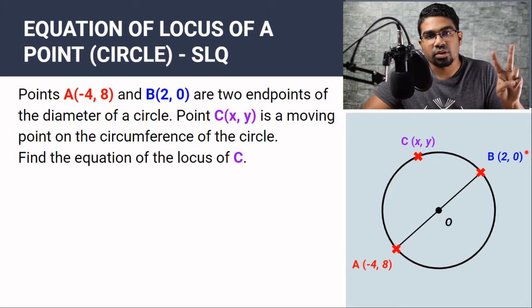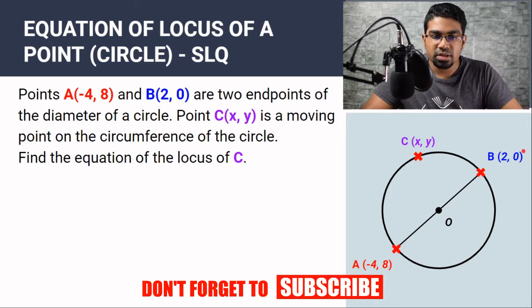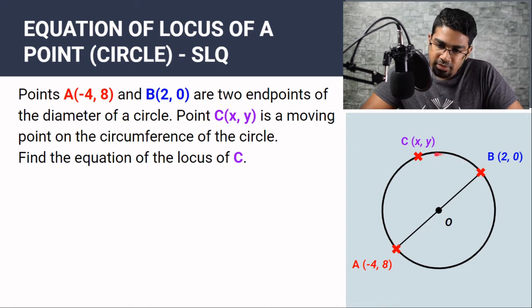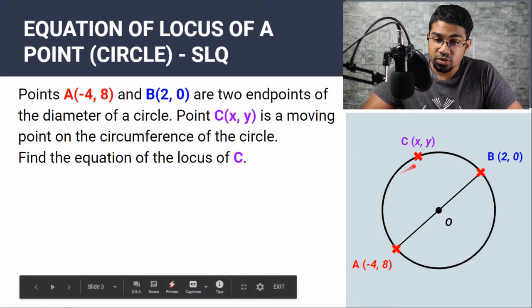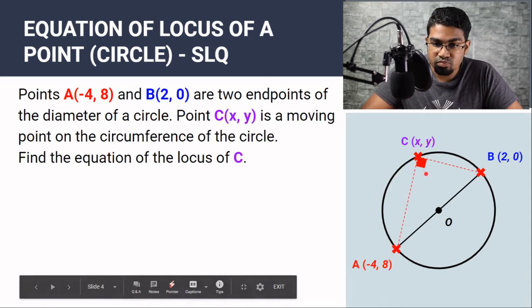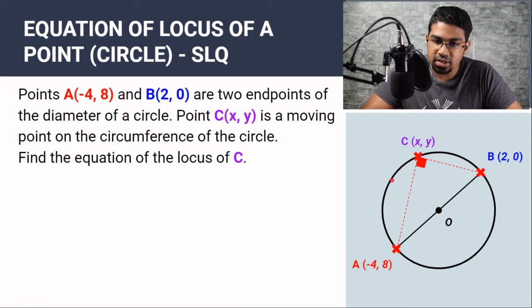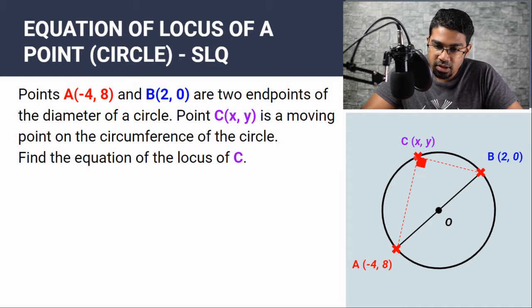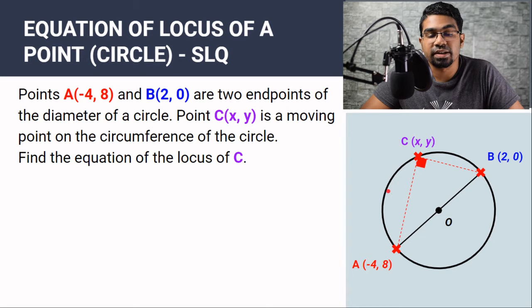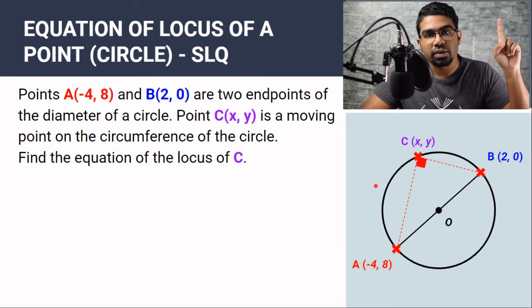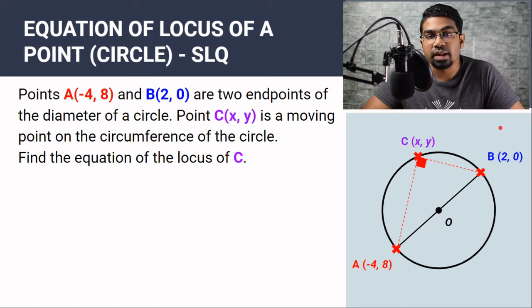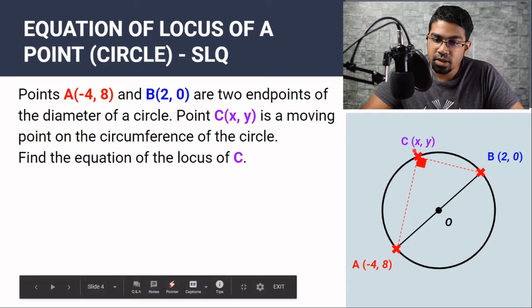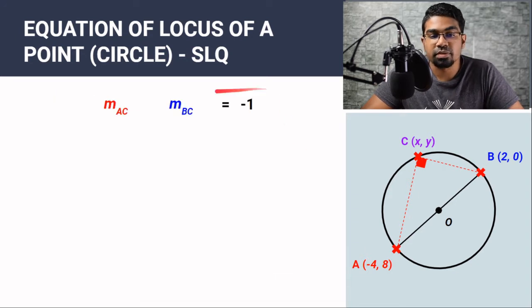There are two different methods I'm going to explore here. The first uses the principle that wherever point C is on the circle, when we join points A, B, and C together, we will form a right angle triangle where the right angle is at C. No matter where C is on the circle, angle ACB will always be 90 degrees. So we can use the concept of perpendicular lines — when we have perpendicular lines, the product of the gradients of the two lines will be negative 1.